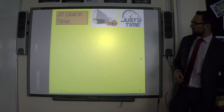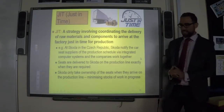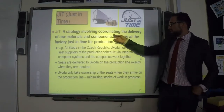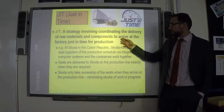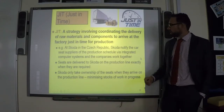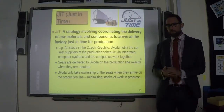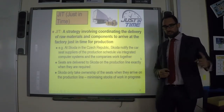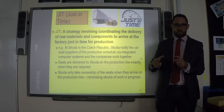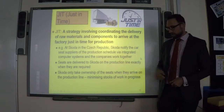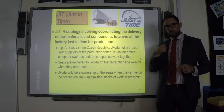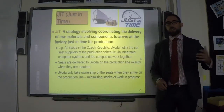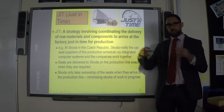You need to know about JIT — Just In Time. JIT is when you get your raw materials to your factory just in time for when you need them, coordinating the delivery of raw materials and components to arrive just in time for production. Skoda does this with their cars — the steering wheel, glass, and seats all go on at the end of production, so Skoda calls their supplier when they're coming towards the end of making a car and requests delivery. The components arrive just in time and go straight onto the car.